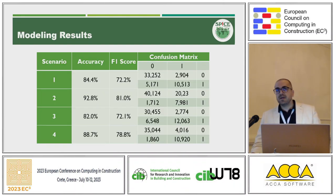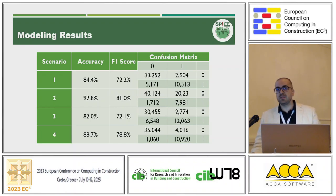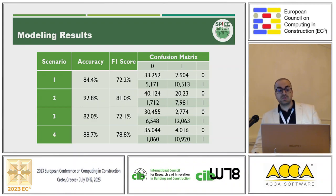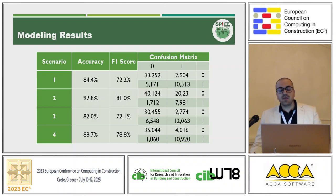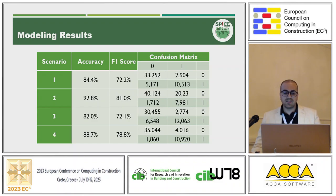This is our confusion matrix of the neural network for four different scenarios. We calculated the accuracy and F1 score. The highest accuracy we achieved is around 93% with an F1 score of 81, for scenario two — three occupants with occupancy sensors. In scenarios two and four, where there are occupancy sensors, the accuracy of results is better, meaning the lighting load can be predicted more accurately compared to cases without occupancy sensors.